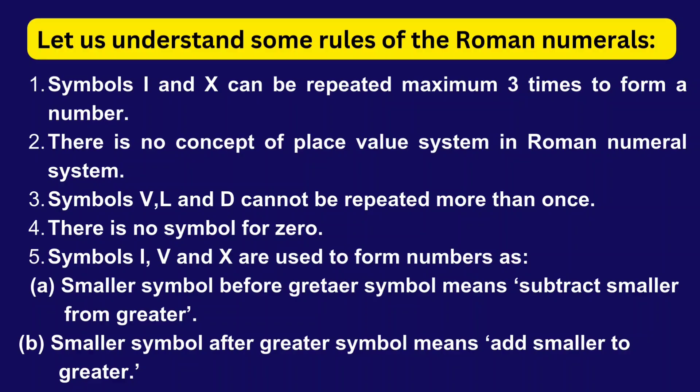Symbols V, L and D cannot be repeated more than once. There is no symbol for zero. Symbols I, V and X are used to form numbers as: smaller symbol before greater symbol means subtract smaller from greater. Smaller symbol after greater symbol means add smaller to greater.